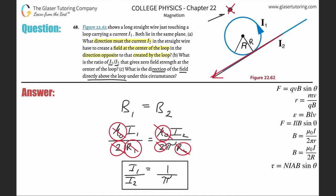For the loop, picking the topmost point of the loop and applying right-hand rule number two with your thumb pointing to the left, that also produces a field into the page at that point above the loop. The bottom portion of the loop produces a field coming out of the page, but it is much farther from the point of interest and therefore much weaker. So the net magnetic field directly above the loop is going into the page.